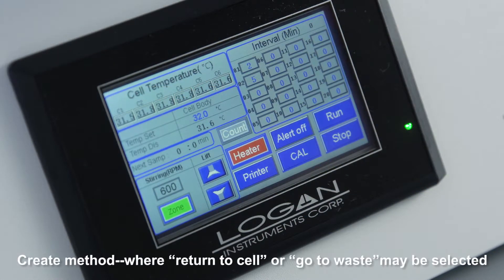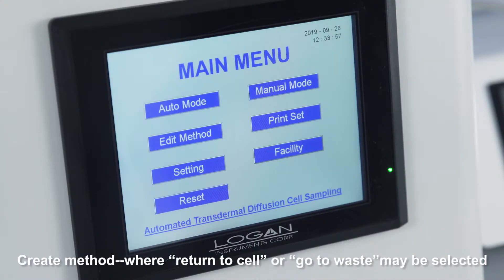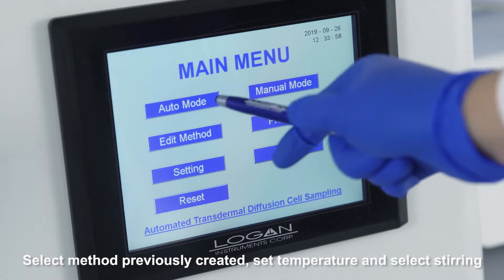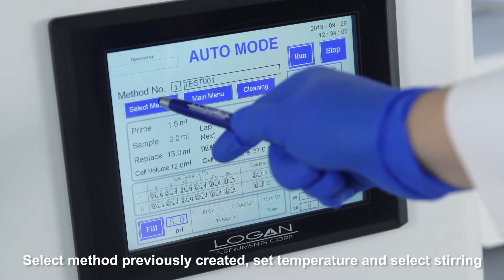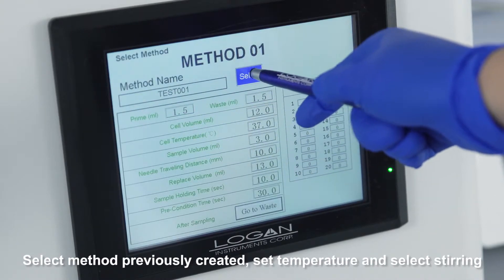Create a method where Return to Cell or Go to Waste may be selected. Select the method previously created. Set temperature and select Stirring.